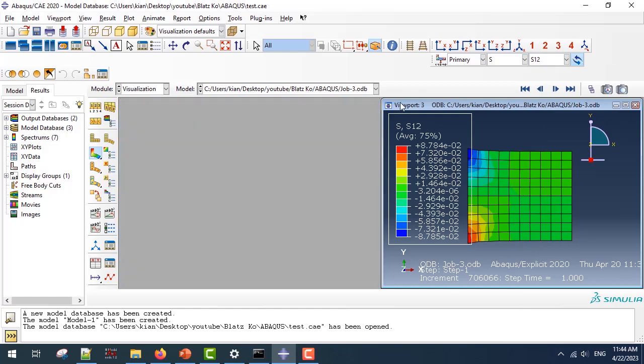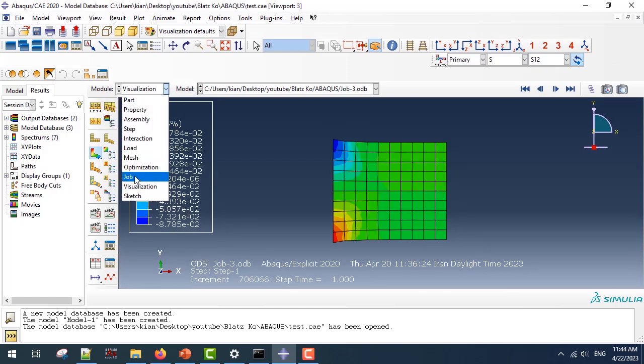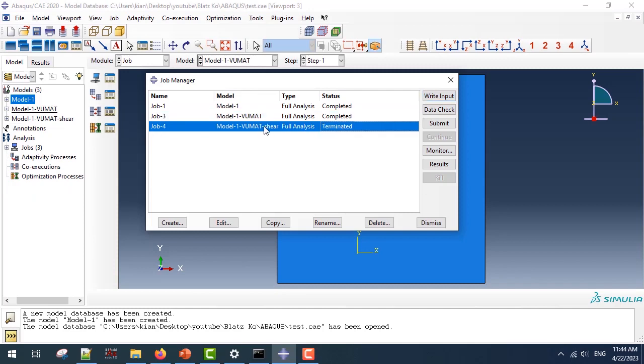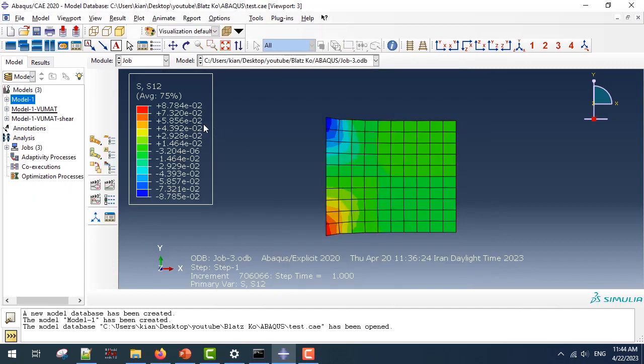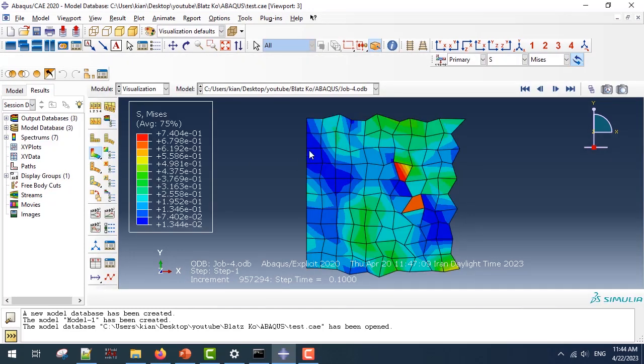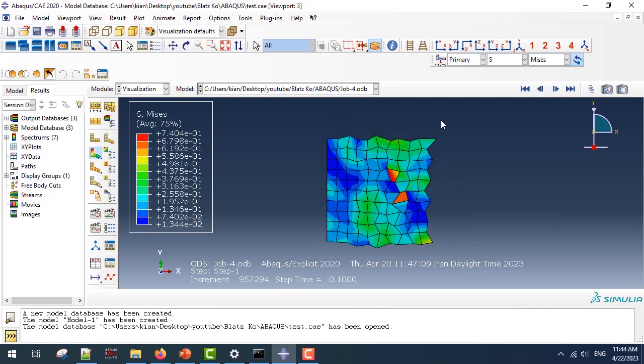However, if you want to see the instability of the VUMAT for the shear loading, you can simply see that this is not the type that we wanted, and it gives you an idea of how instability looks like.